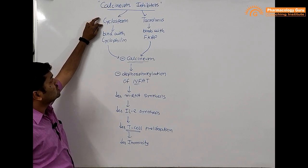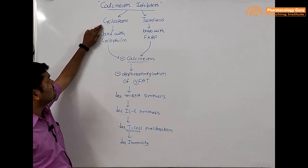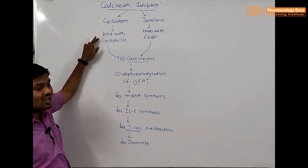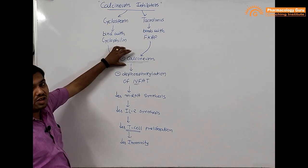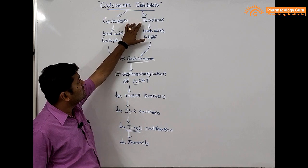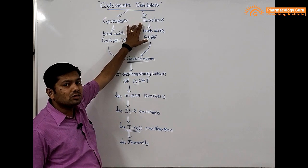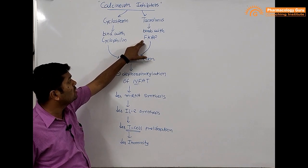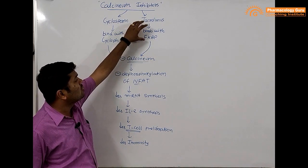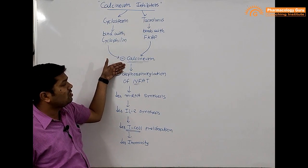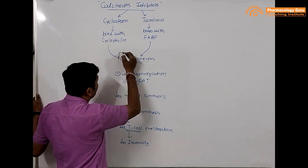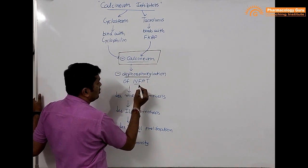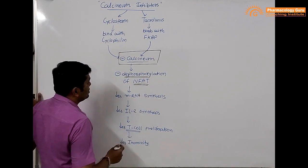To summarize: cyclosporine enters the helper T cell and binds with cyclophilin; that complex inhibits calcineurin activity. Tacrolimus enters the helper T cell and binds with FKBP — FK506 binding protein — and that complex also inhibits calcineurin activity.